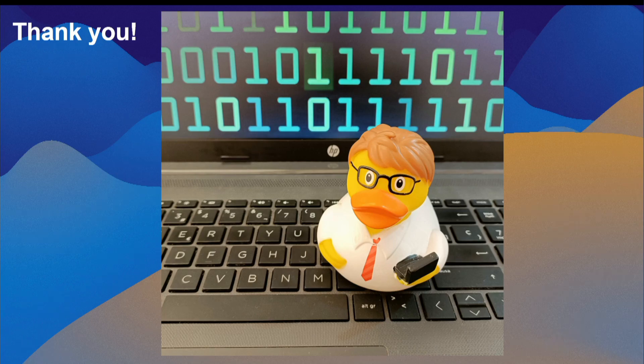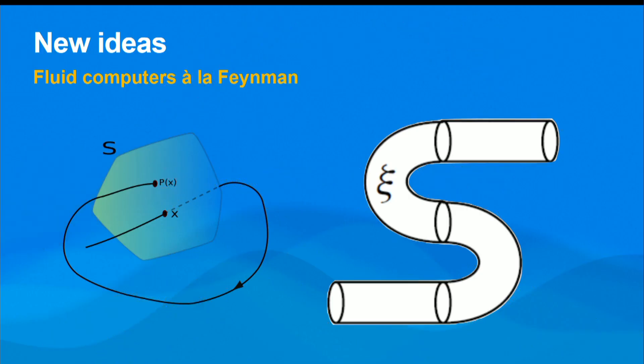Q&A: An audience member asks about the mathematical features of the Cantor square that make it interesting — perhaps some ultrametric structure. The speaker responds: the key word is fractal, because you want this kind of logical chaos. One could try other fractals, and the construction is universal so other constructions are equivalent. A new direction being explored is relating this construction to topological quantum field theory to build a new extension of fluid computers.